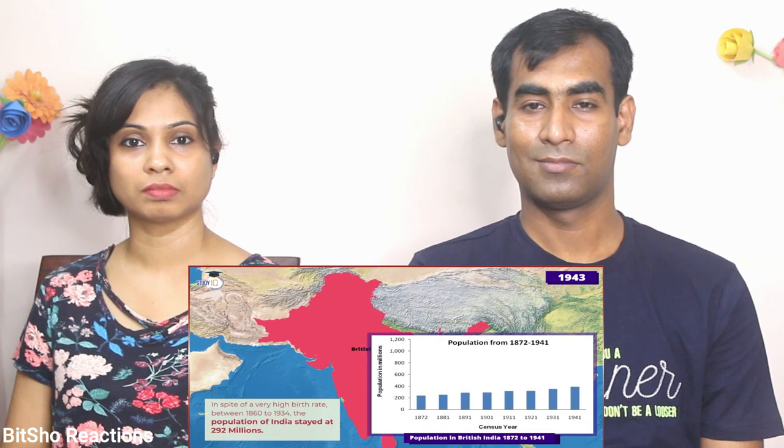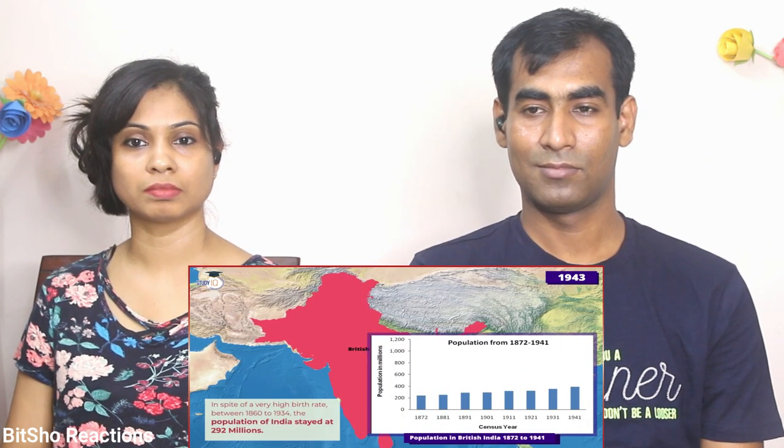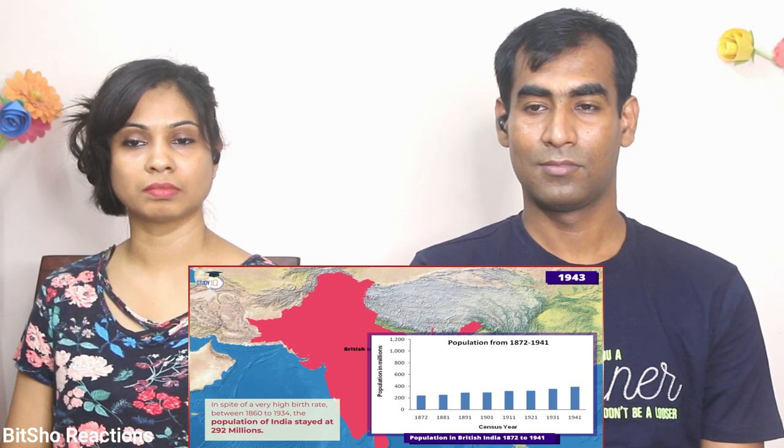Winston Churchill ने 1943 Famine के वक्त Australian food supply World War II के लिए stockpile करने के लिए Britain divert की थी — और ये stockpiling तब हो रही थी जब millions of Indians were starving to death। Bengal Famine 1943 में alone 3 to 5 million लोगों की death हुई। Churchill ने कहा था कि वो Indians की परवा नहीं करते, क्योंकि Indians rabbits के जैसे बच्चे पैदा करते हैं।